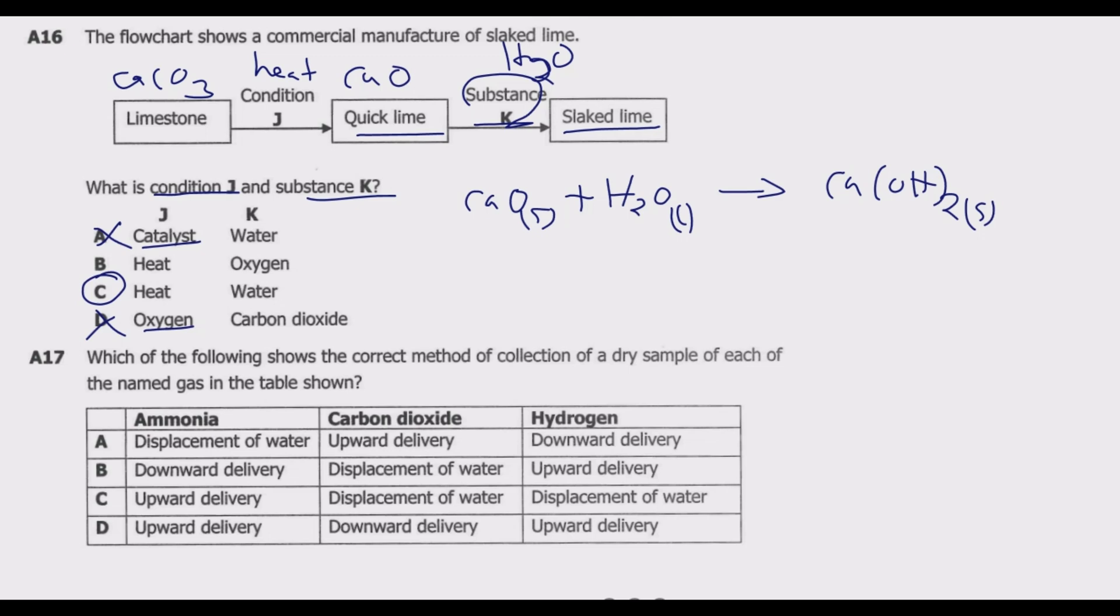Question A17: Which of the following shows the correct method of collection of a dry sample of each of the named gases in the table shown? To determine the method used to collect the gas, we use two key things: number one, the density of the gas, and number two, the solubility of the gas. These two would determine the method we use.